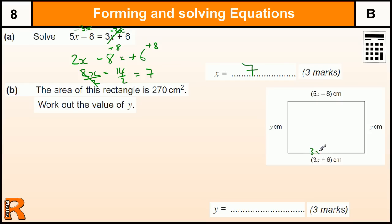So I've got 3 times 7 plus 6, which is 27. And the same would happen here - 5 times 7 minus 8 is also 27.